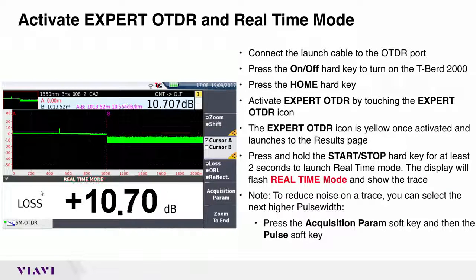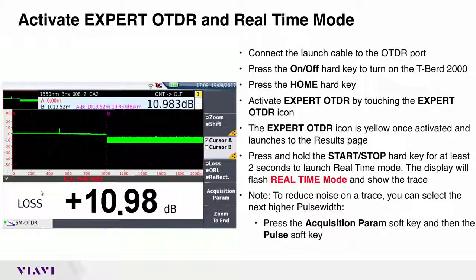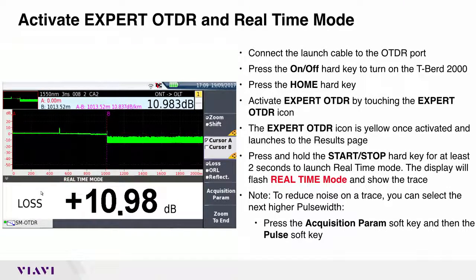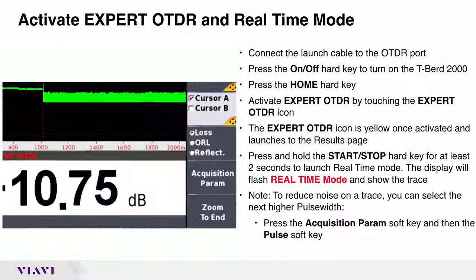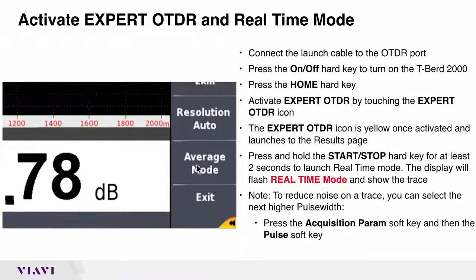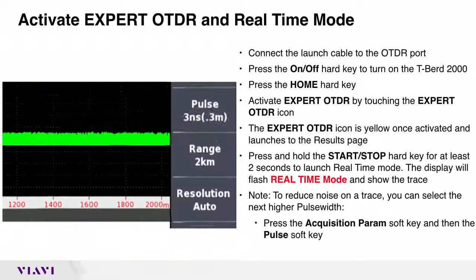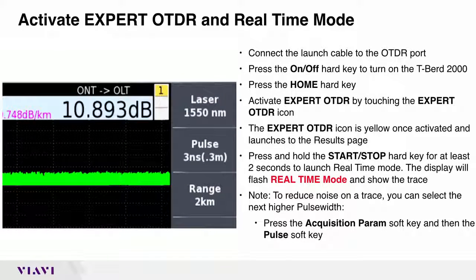To reduce noise on a trace, you can select the next higher pulse width. To do this, press the acquisition param soft key and then the pulse soft key.